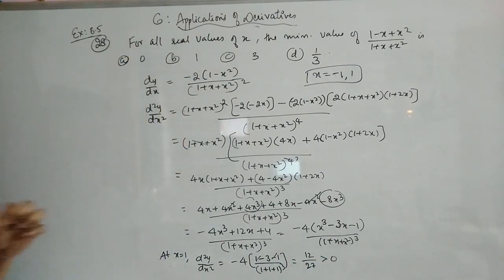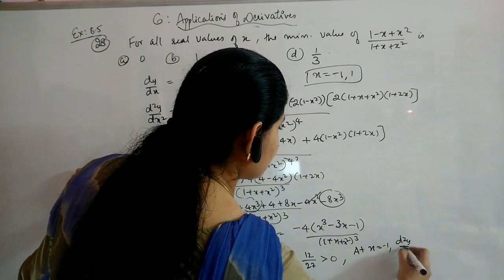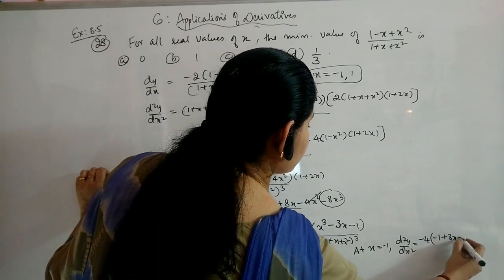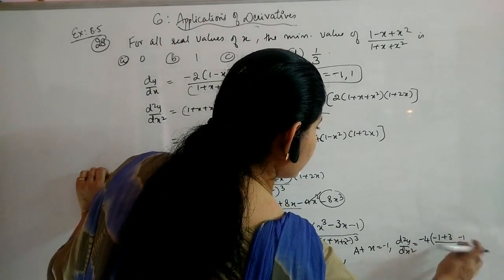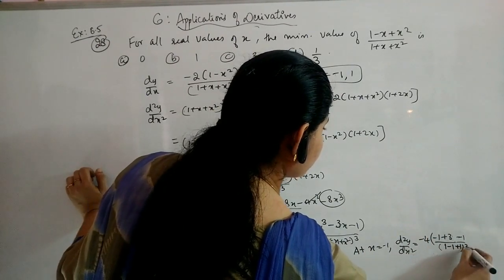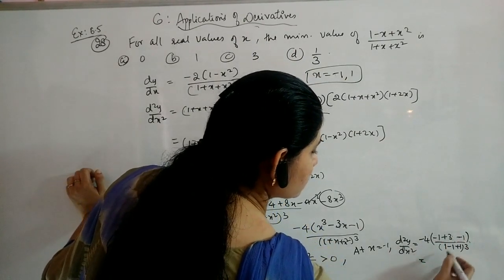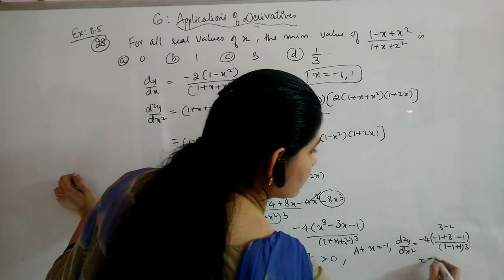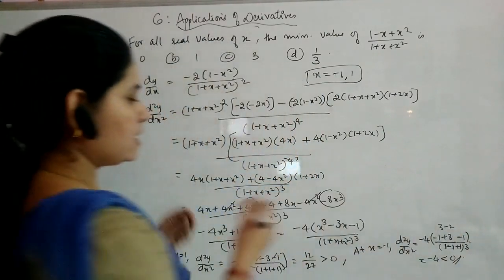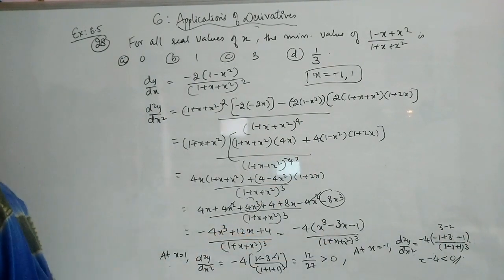At x = 1, d²y/dx² > 0, so x = 1 is a minimum. At x = -1: d²y/dx² = -4(-1 - 3(-1) + 1) evaluated gives -4(3)/1... computing carefully: -4 divided by 1 = -4, which is less than 0. So at x = -1, d²y/dx² < 0.